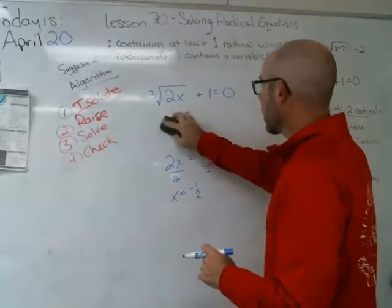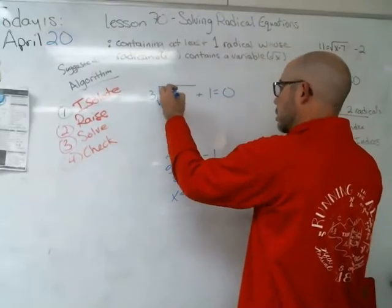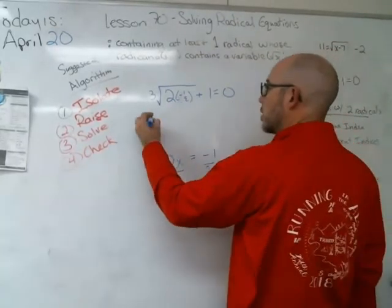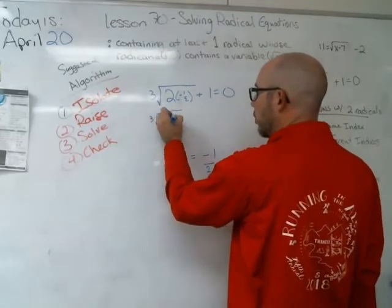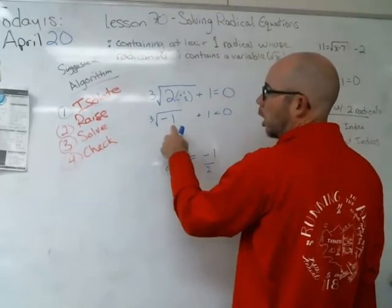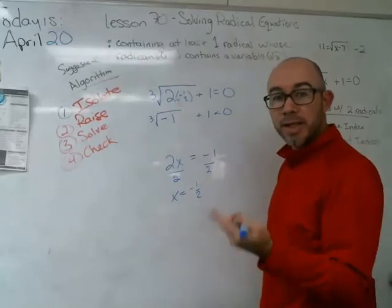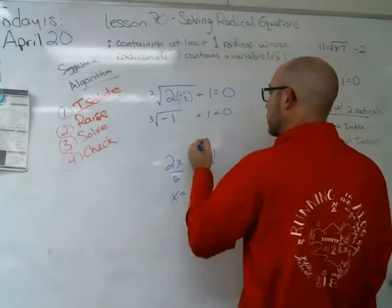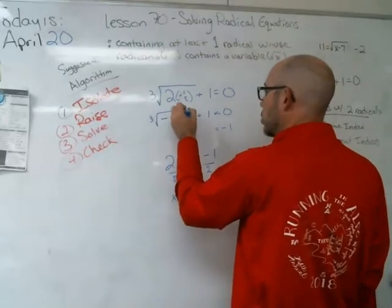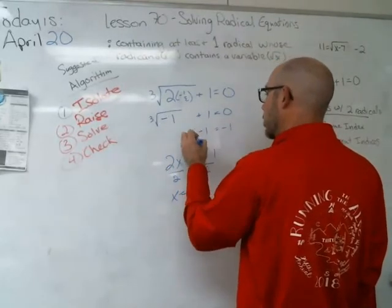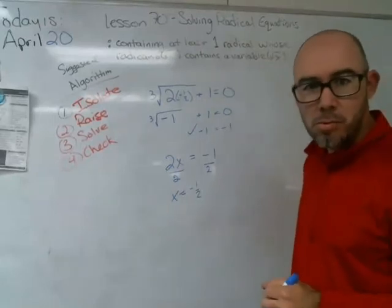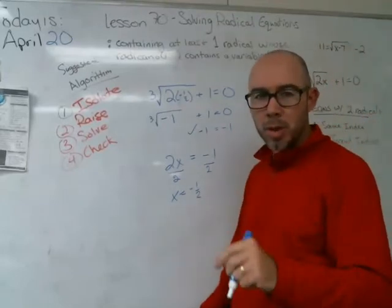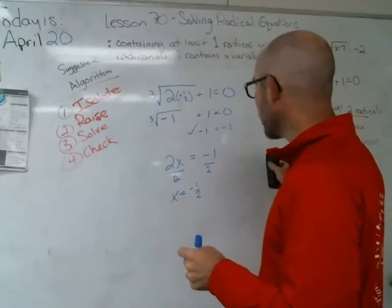Check: plug in negative one-half. That gives the cubed root of 2 times negative one-half plus 1 equals zero, which is the cubed root of negative one plus 1 equals zero. The cubed root of negative one is negative one — yes, you can do that, negative times negative times negative gives negative. So negative one plus 1 equals zero. That's a good solution — it works. Try it on your calculator: the cubed root of negative one gives negative one.